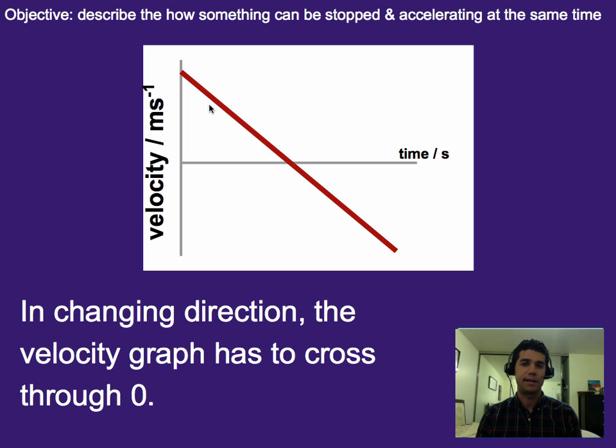So what I mean by that, that idea of it has to go through zero, is if you call, let's say, up positive and down negative.